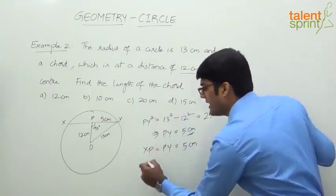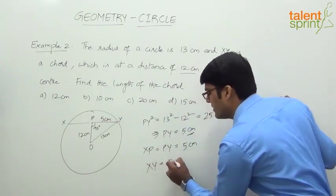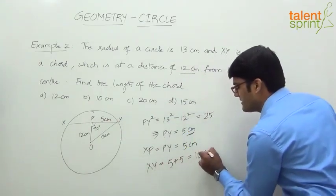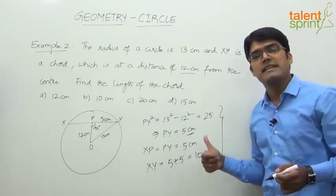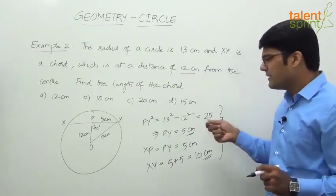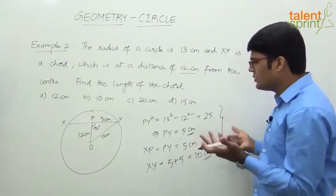So what is the length of the chord XY? Length of the chord XY will be equal to 5 plus 5, that is 10 centimeters. Well, you can cut down the number of steps here. I am just giving a detailed explanation so that you can follow, but within two or three steps, or I think two steps, you will be able to solve this question.